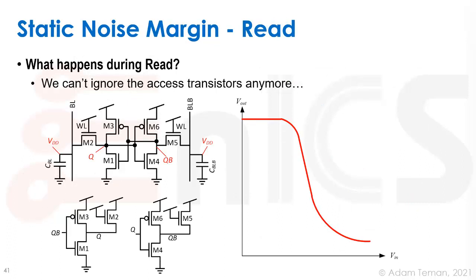The question now is: what happens during read? We can't ignore the access transistors anymore. Now M2 and M5 are both going to be on, and we get the equivalent circuits shown below. Previously, we assumed Q and QB were at constant voltages and shut off some transistors from our equivalent schematic. But when plotting the VTC of these inverters, we have to run the input voltage — QB for one inverter and Q for the other — from 0 to VDD, and we cannot simply turn off some transistors in that situation.